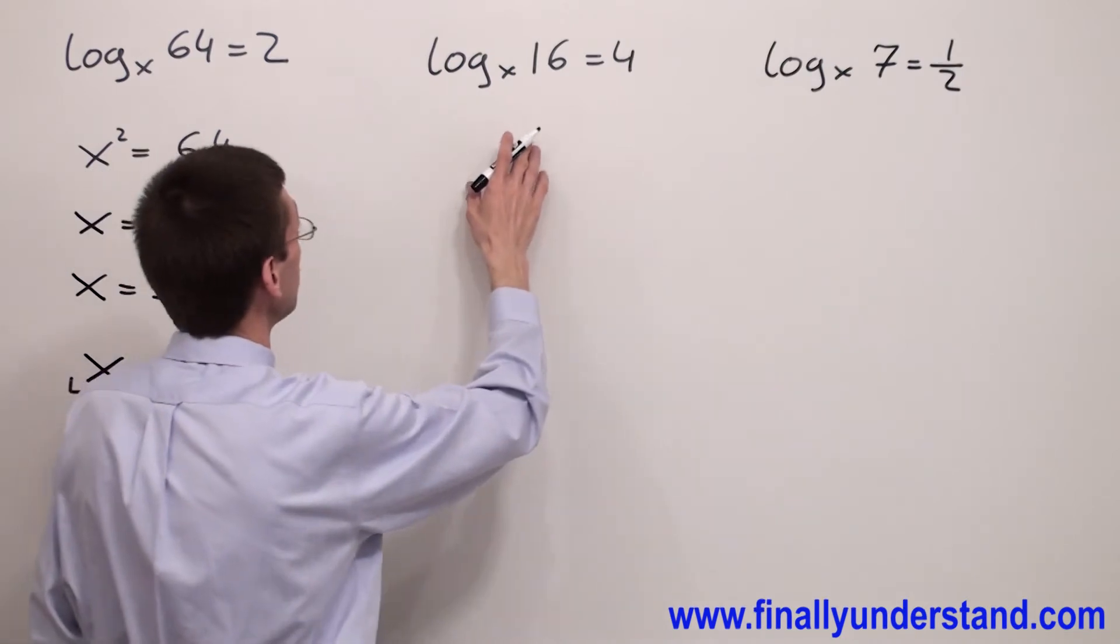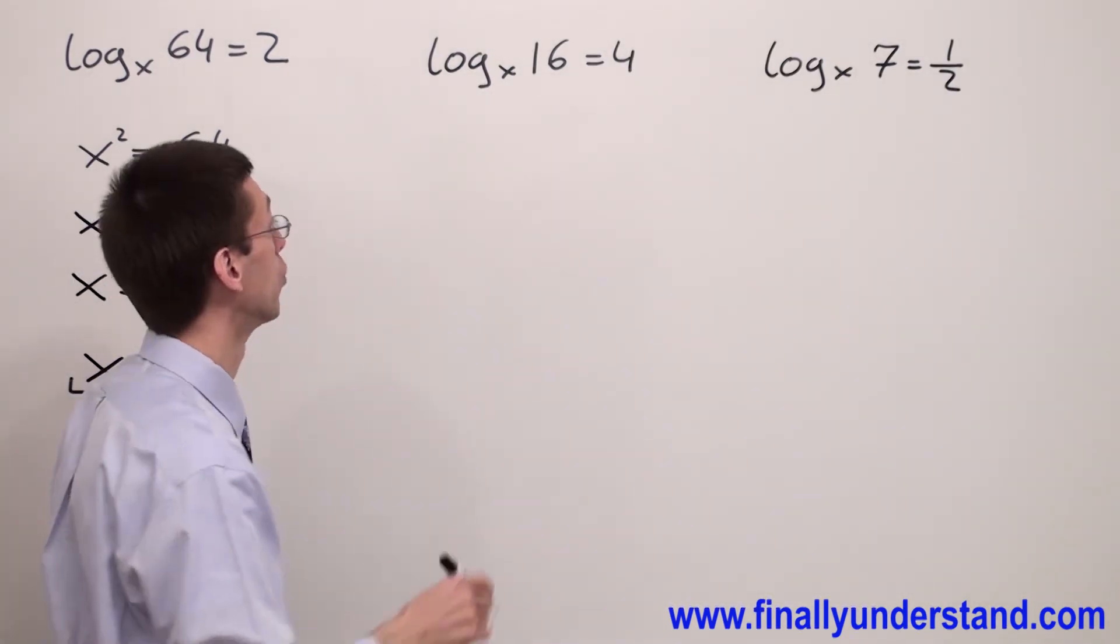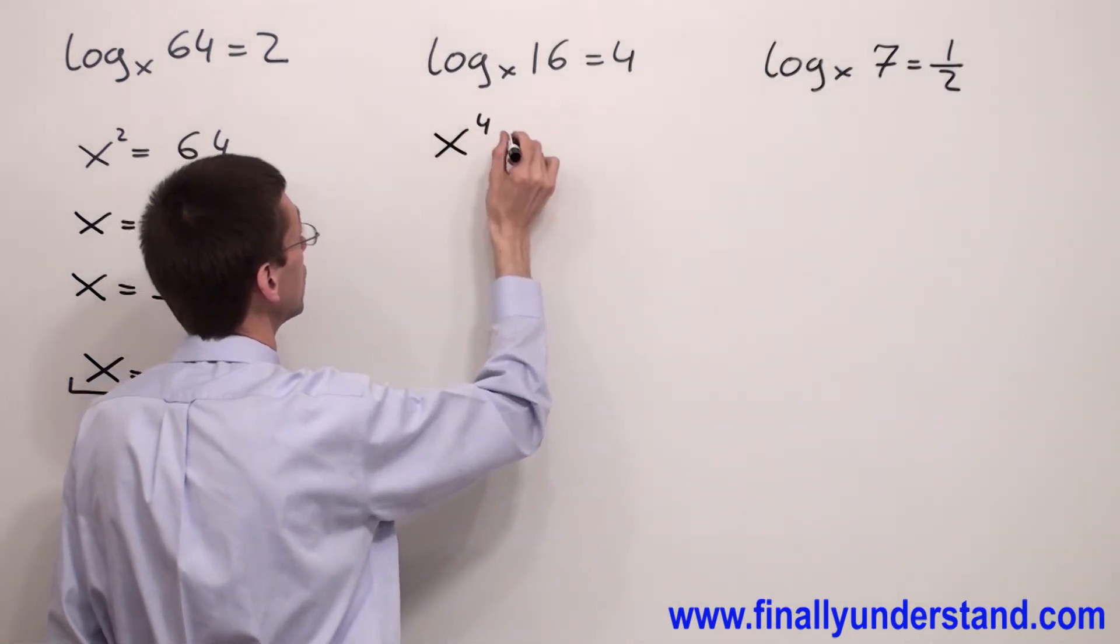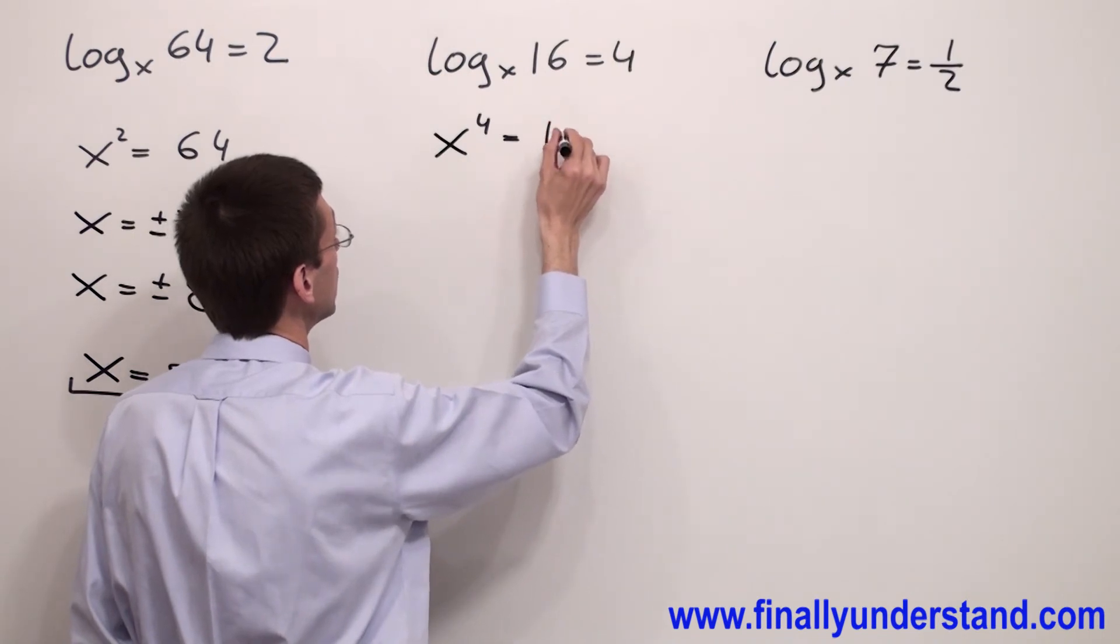Let's take a look at the next one. I'm going to convert the logarithmic form to the exponential one more time. I have x to the fourth equals 16.